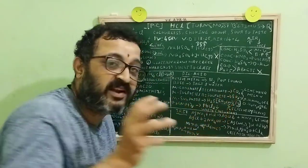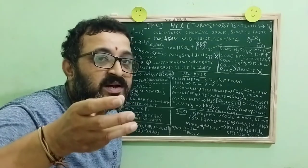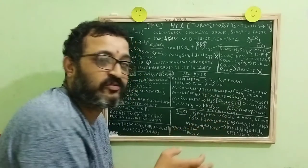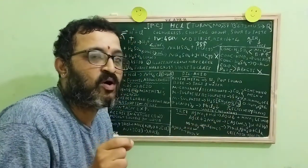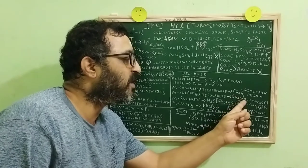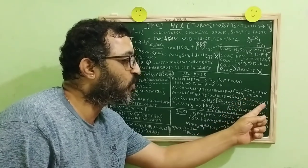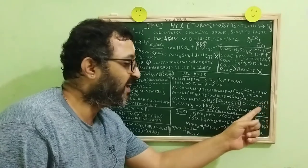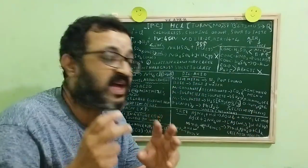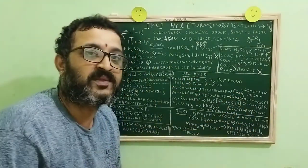Now, carbon dioxide and sulphur dioxide, both are acidic in nature. Both will turn lime water milky. Then, how will you distinguish these two? We have a small way of doing that. Only sulphur dioxide can turn pink color KMnO4 to colorless. And, orange K2Cr2O7 to green. Whereas, carbon dioxide does not react. It does not bring about the color changes.